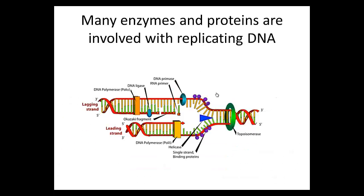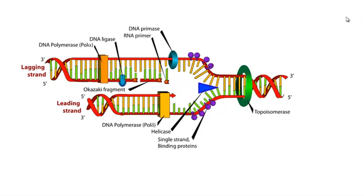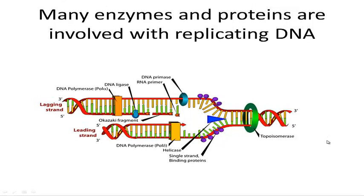We have enzymes and proteins that create this replicated DNA. There's polymerase, ligase, primase, helicase, binding proteins, topoisomerase - a lot going on. It might look overwhelming at first, but we'll take it little by little.